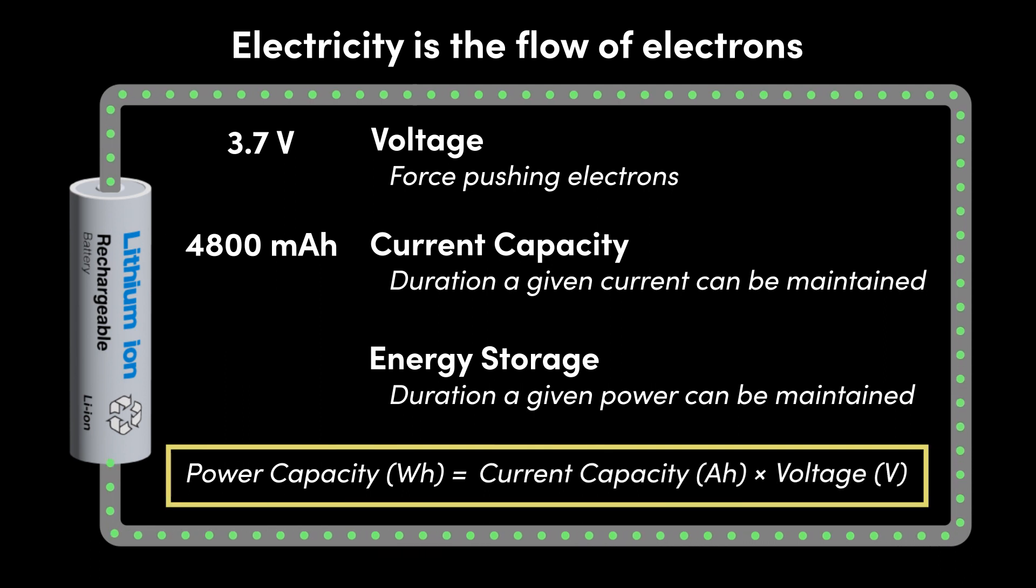In this case, 4.8 amp hours multiplied by 3.7 volts, which gives us 17.8 watt hours, or 0.0178 kilowatt hours. But how is current, that is the flow of electrons, released from the battery cell?